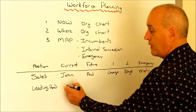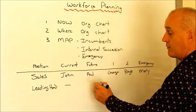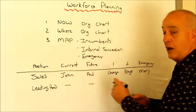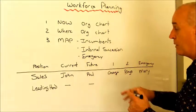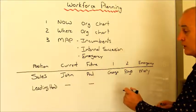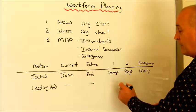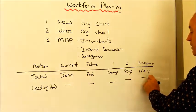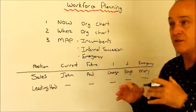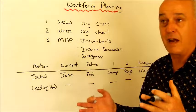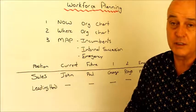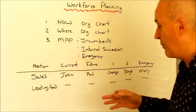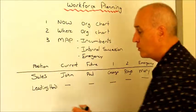We might have a role for a leading hand, and we would have people in the current role. We'd have someone identified who could step up in the future and be the ideal candidate to replace that person, then the next person identified, and the emergency person. If something hits the fan and goes wrong — the person gets hit by a bus — then we've got somebody who could step up and do that role straight away.